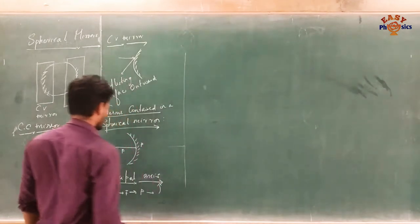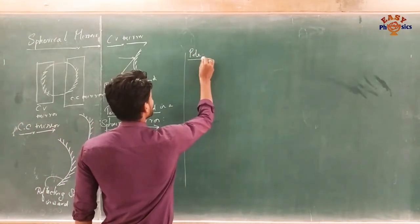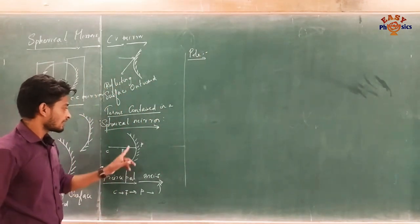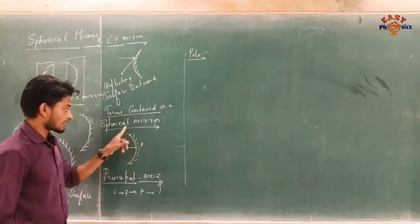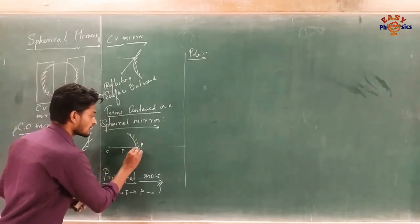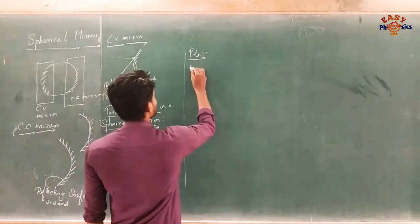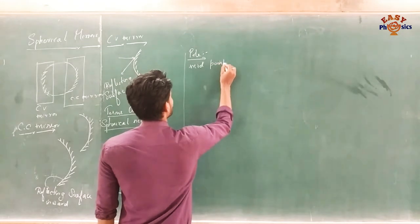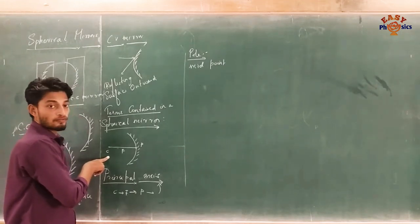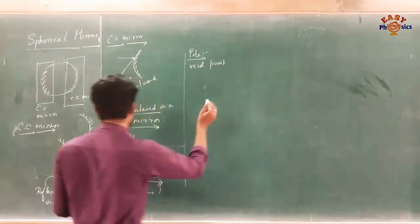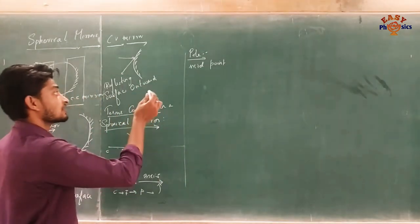Next we have the pole. The pole is the midpoint of the mirror. The aperture is the width of the mirror, and the pole is the midpoint of that aperture. The center of curvature is the midpoint of the hollow sphere from which the mirror is part, and the pole is the midpoint of the mirror surface.